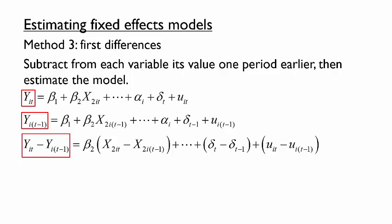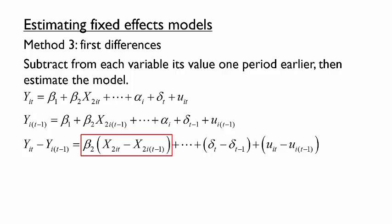Similarly, first differences of the independent variables become the new independent variables of the model. Similar to the within-groups estimator, we see that the alpha_i fixed effects cancel out. This cancellation shows that the first differences method takes into account these time-invariant individual characteristics, just like the within-group fixed effects and dummy variable regression methods did. However, the first differences method is not mathematically equivalent to the other two.